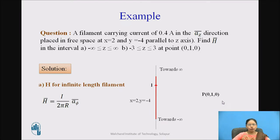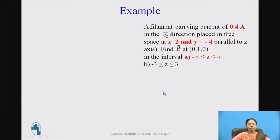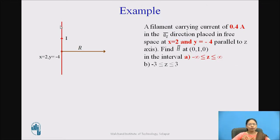Let us consider the point P at (0, 1, 0), because we want to find H bar at point P (0, 1, 0). We join this point P to the filament in such a way that the line is perpendicular to the infinite length filament, and the distance between these two is R. From the given data, I is 0.4 amperes in the A_Z bar direction, and the filament is placed at X equals 2, Y equals minus 4. The distance R is the perpendicular from P at (0, 1, 0) to the filament.